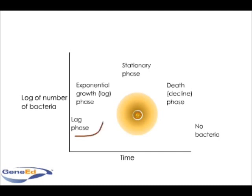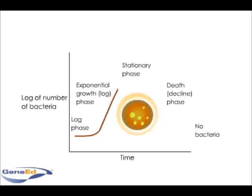Replication starts and rapidly continues during the second phase, termed the log, or logarithmic, or exponential phase. Bacterial cells undergo binary fission at a constant rate, and thus the number of bacteria increases logarithmically.